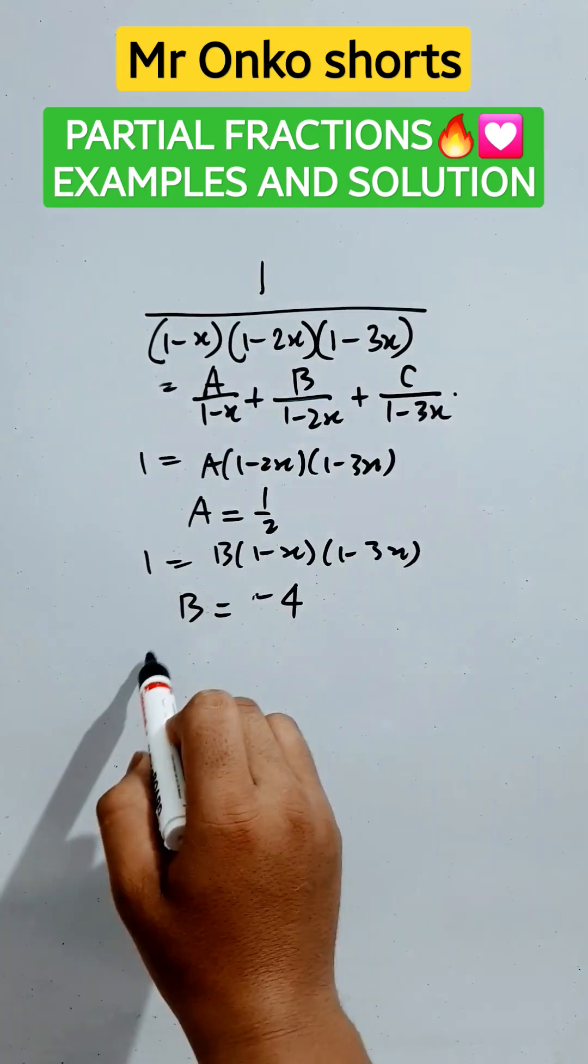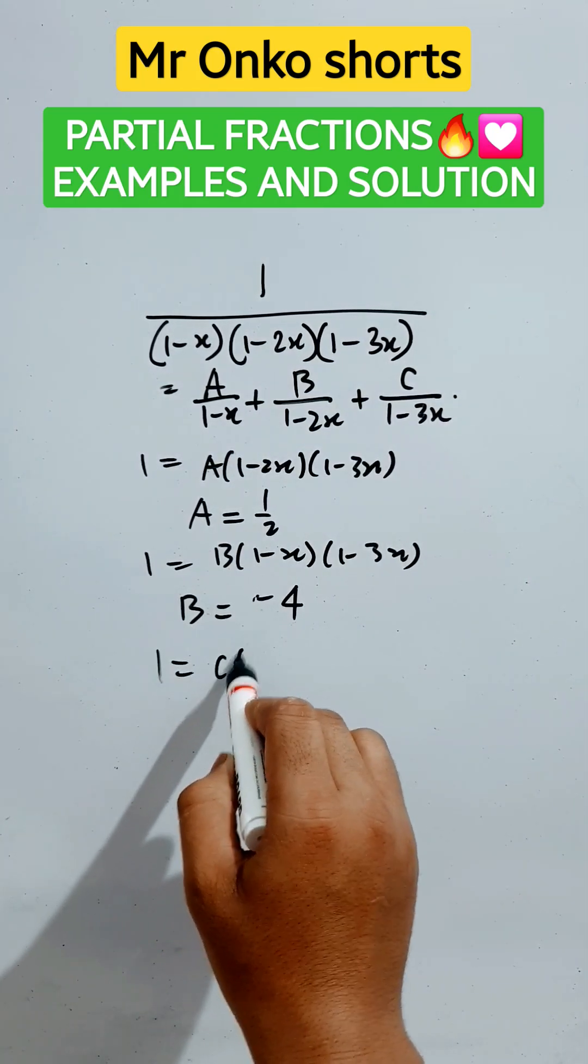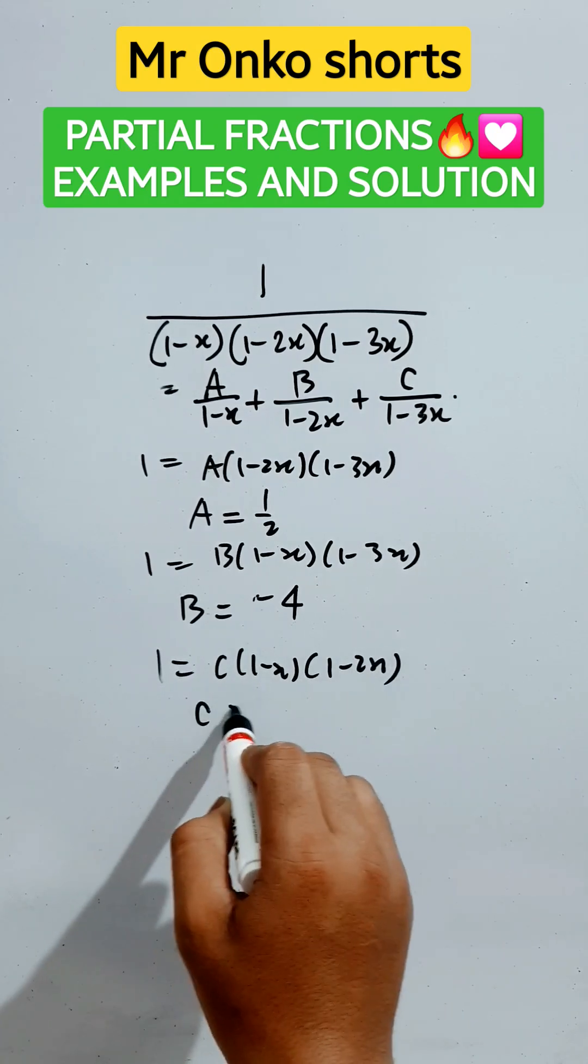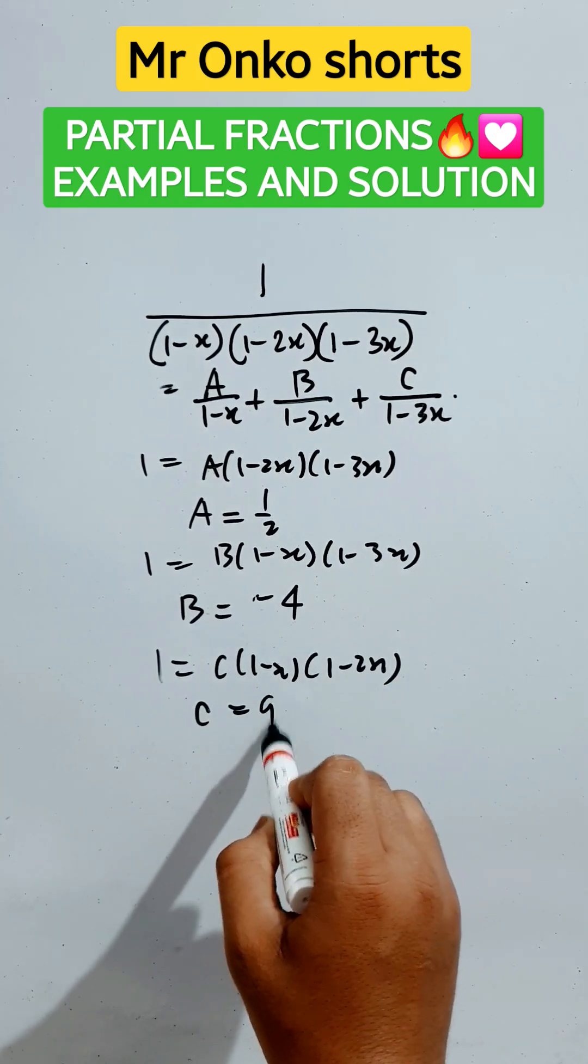If we put x equals to 1/3, then these two parts will be vanished. In case of C, 1 equals C into 1 minus x into 1 minus 2x. Then putting x equals to 1/3, we will get C equals to 9/2. Thus we have found all coefficients.